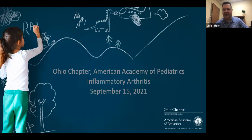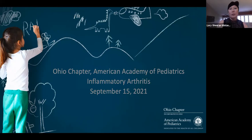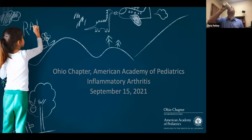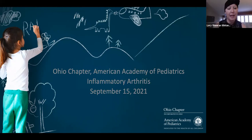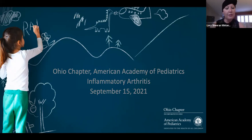Good morning and thank you for joining the Ohio Chapter American Academy of Pediatrics webinar focusing on Juvenile Idiopathic Arthritis. This webinar will be recorded and housed on the Ohio AAP website. Following this webinar we will be sending the link to the recording along with instructions on how to obtain your CME. Please mute your line to avoid interruptions, and use the chat feature to ask questions throughout the presentation. You may also go off mute at the end of the formal presentation.